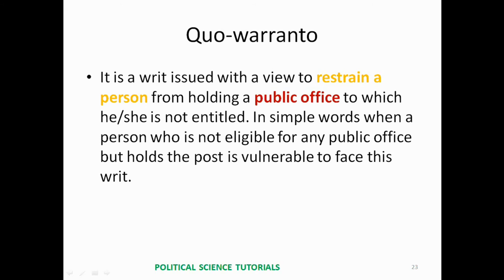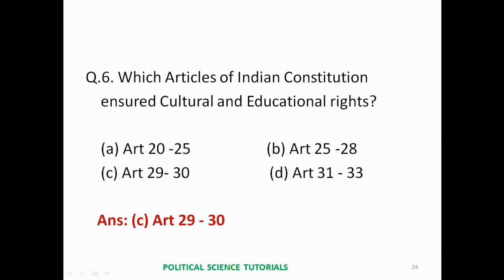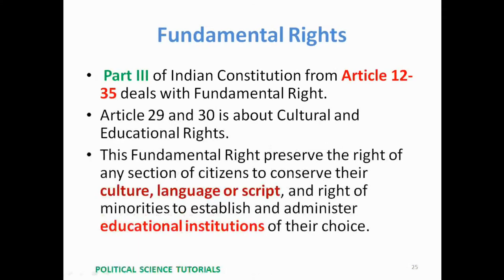Question 6: Which articles of the Indian Constitution ensure cultural and educational rights? Answer: Articles 29 and 30. Part 3 of the Indian Constitution, from Article 12 to 35, deals with fundamental rights. Articles 29 and 30 preserve the right of any section of citizens to conserve their culture, language, or script, and the right of minorities to establish and administer educational institutions of their choice.